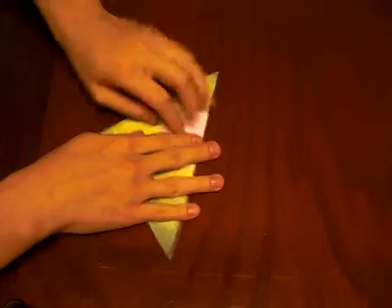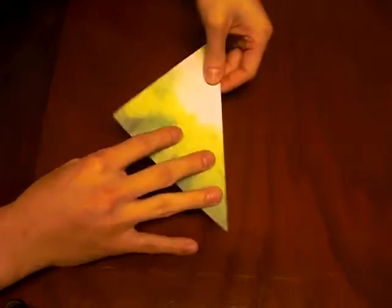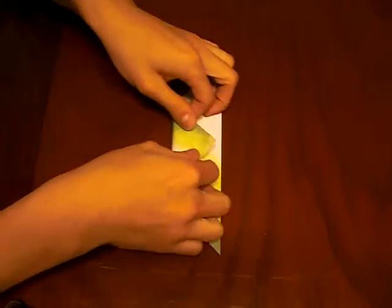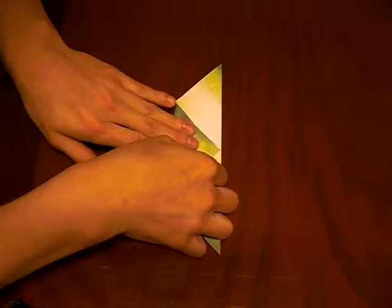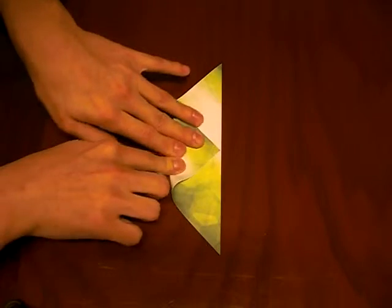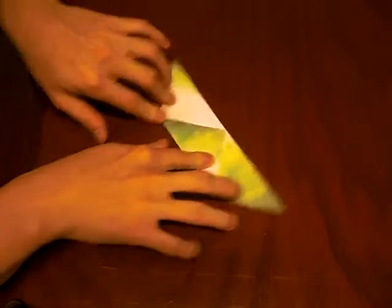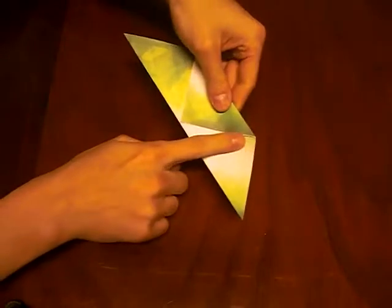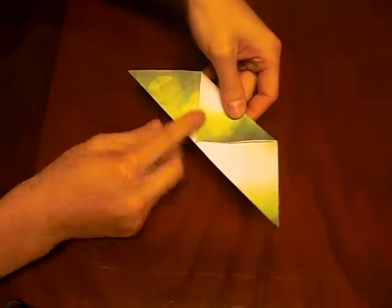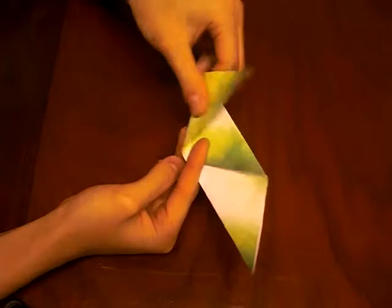This is a very simple origami. I'm going to fold the triangle down again toward the center, and from here you're going to take these two sides and fold them upwards like this.